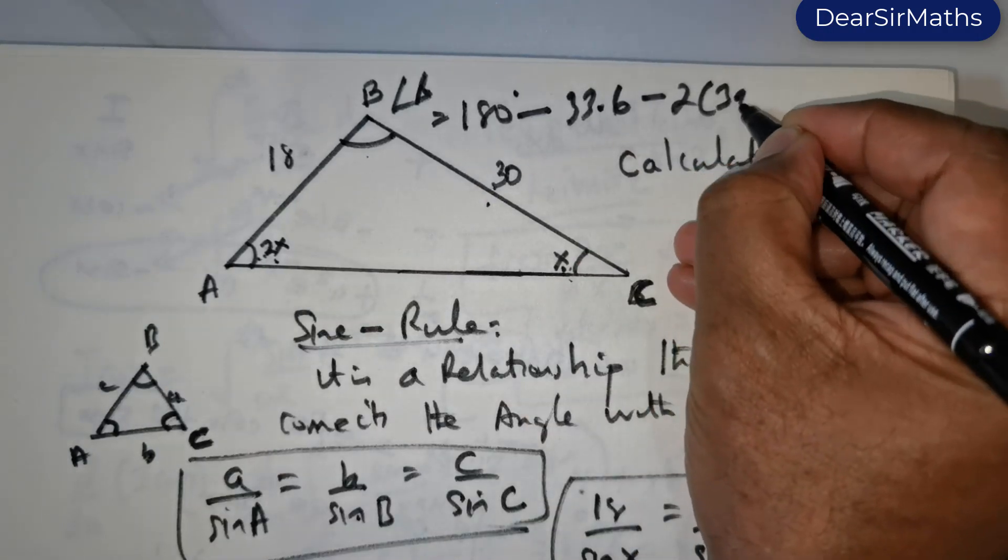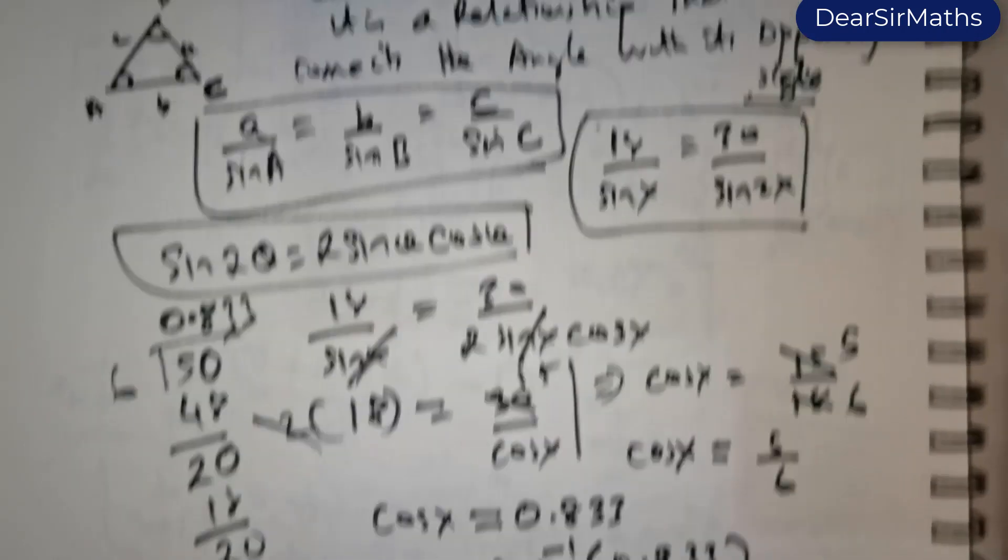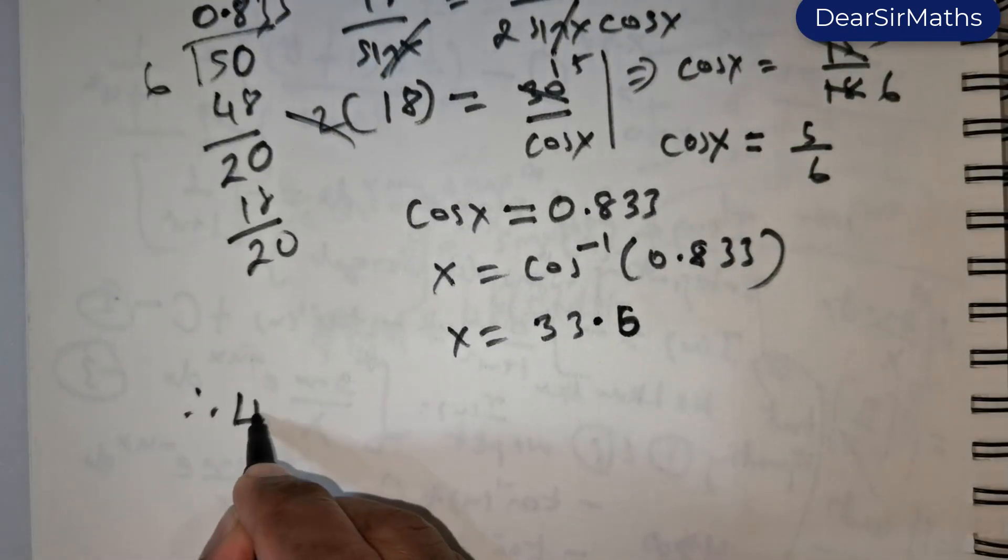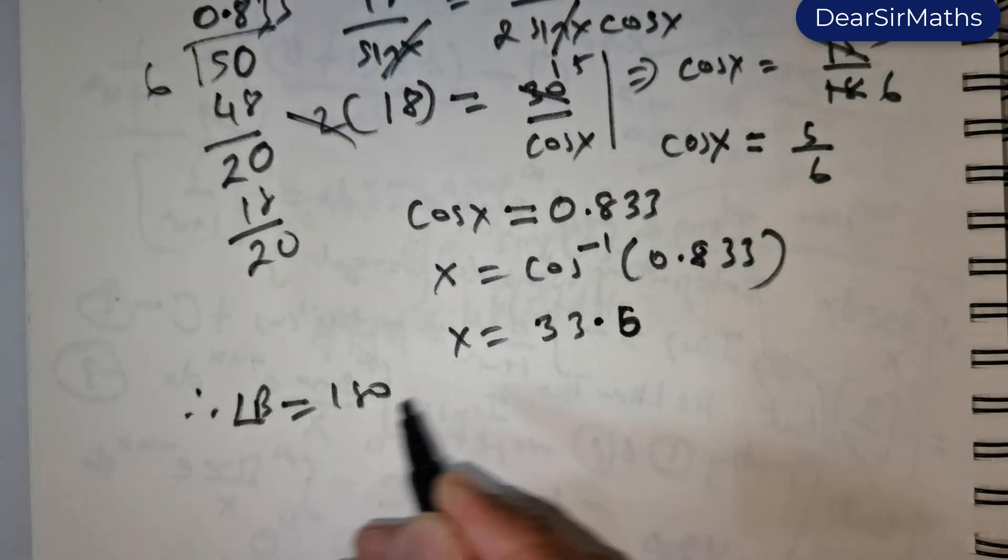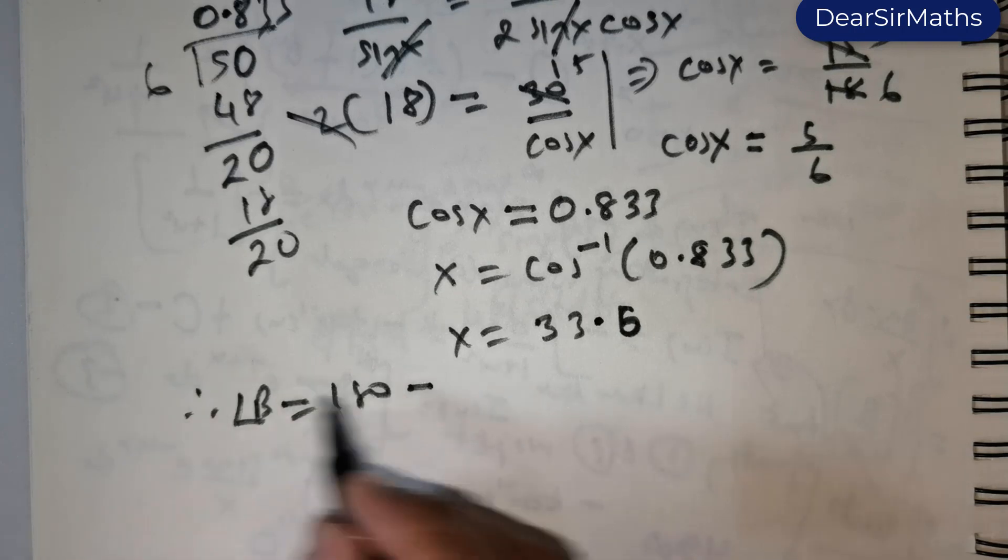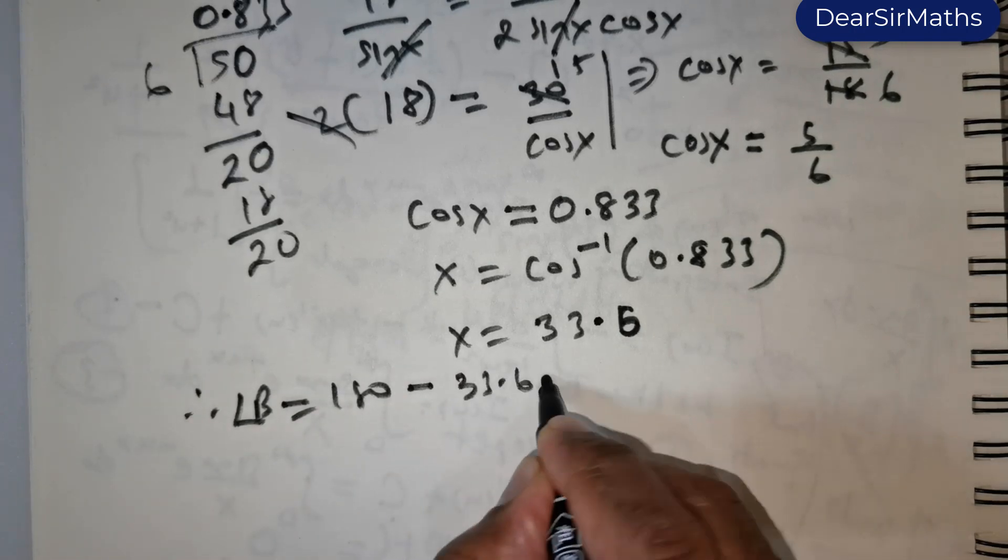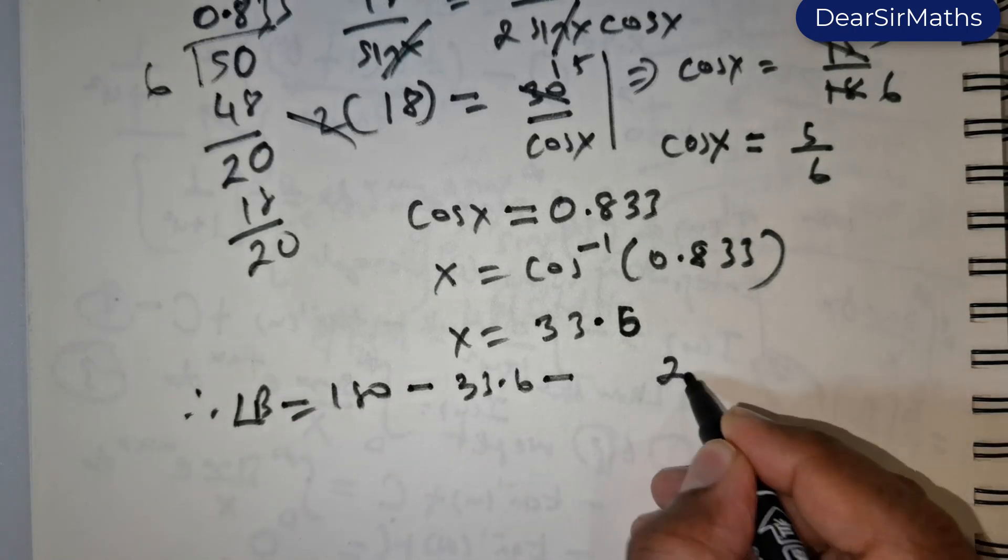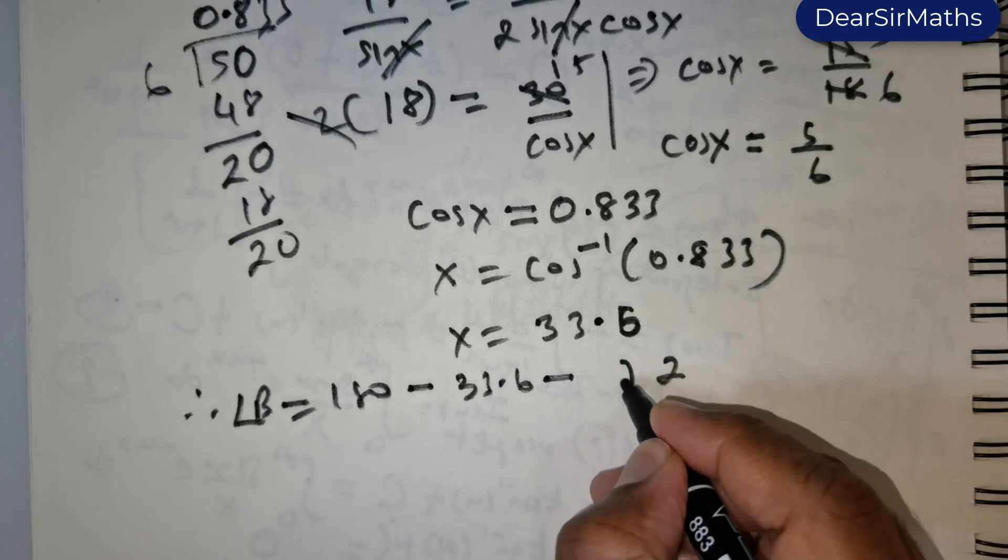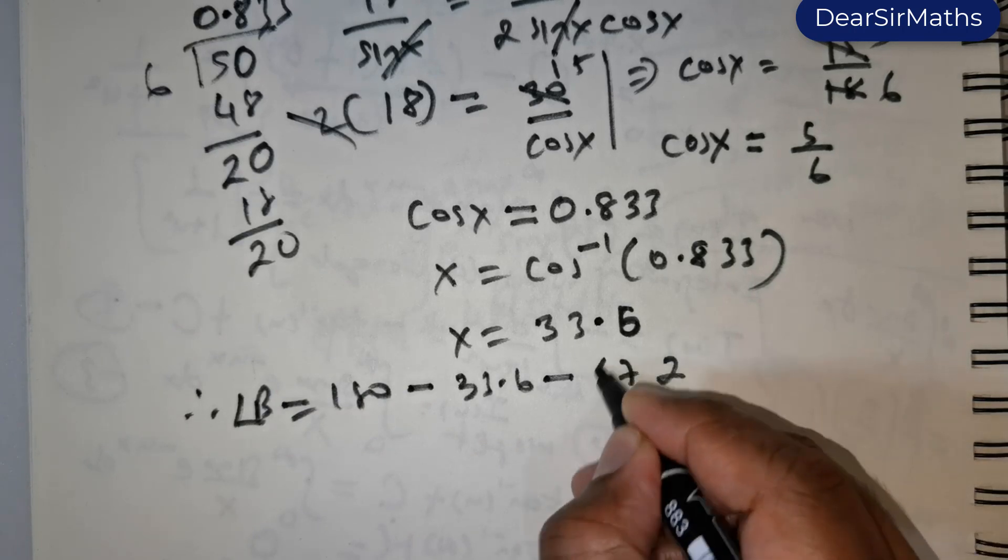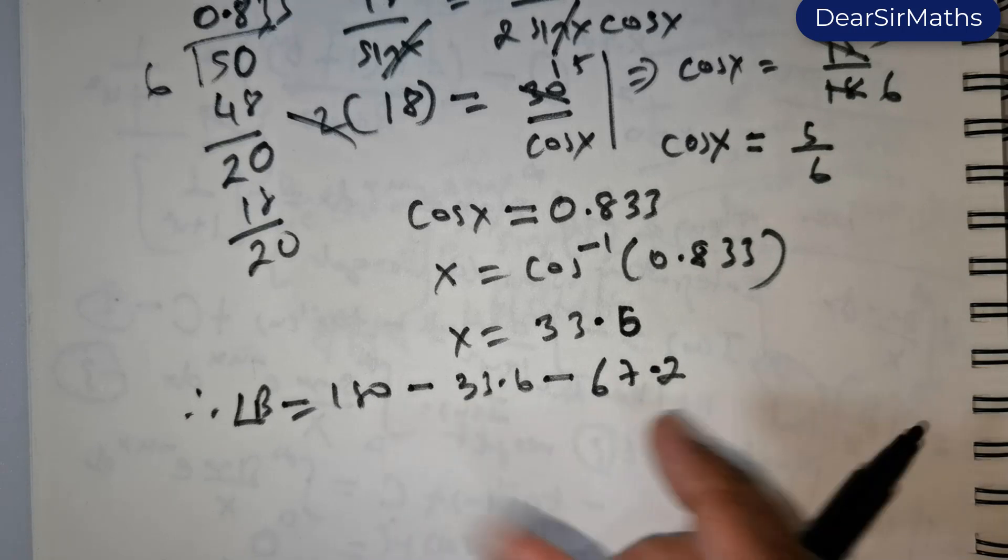So let us do that. Therefore angle B is equal to 180 minus 33.6 minus—6 times 2 is 12, 1, 3 times 2 is 6, 7, and 3 times 2 is 6. So add up these two things.